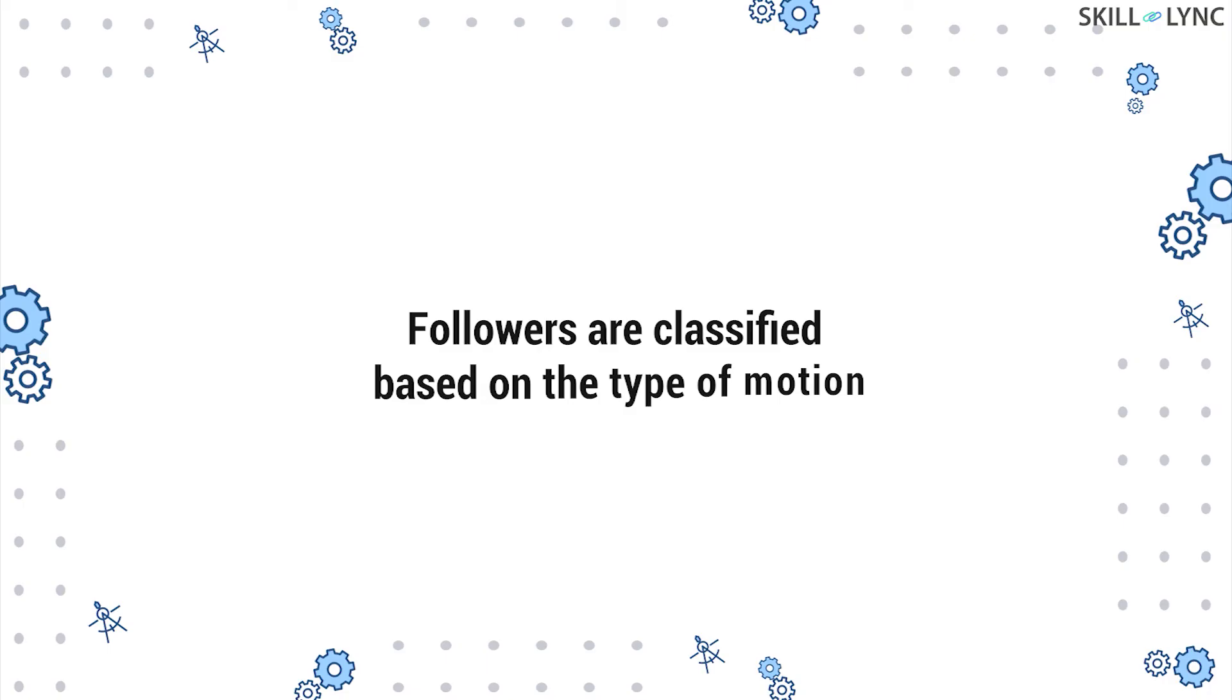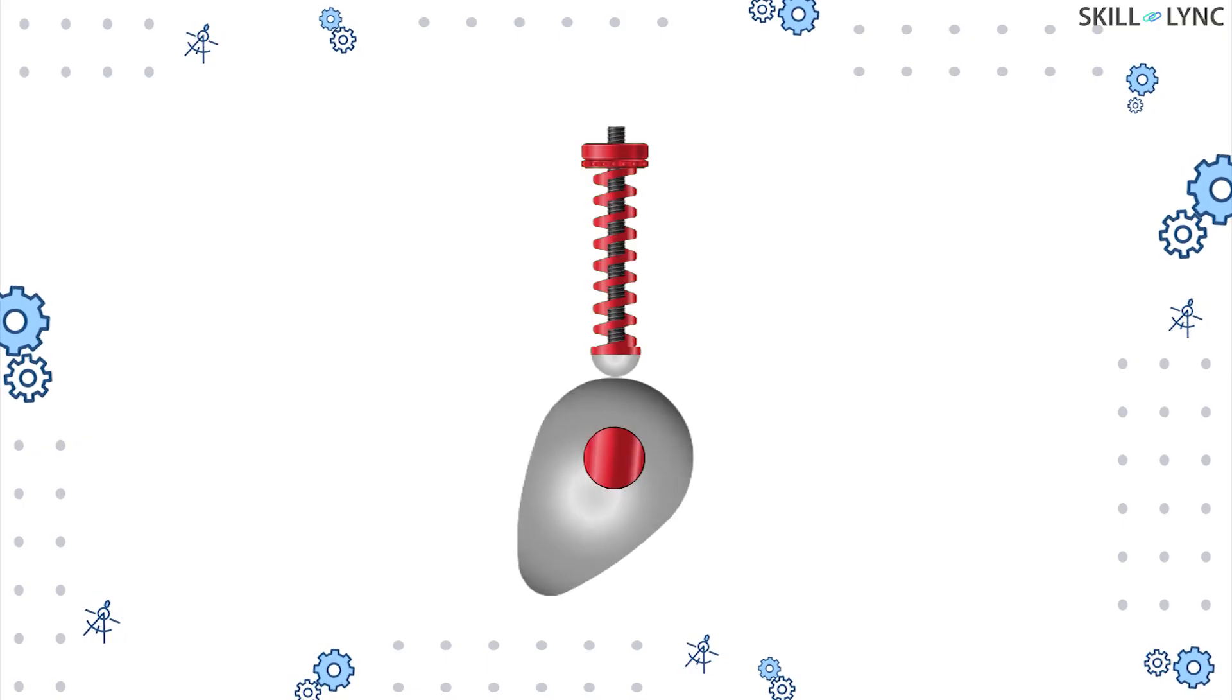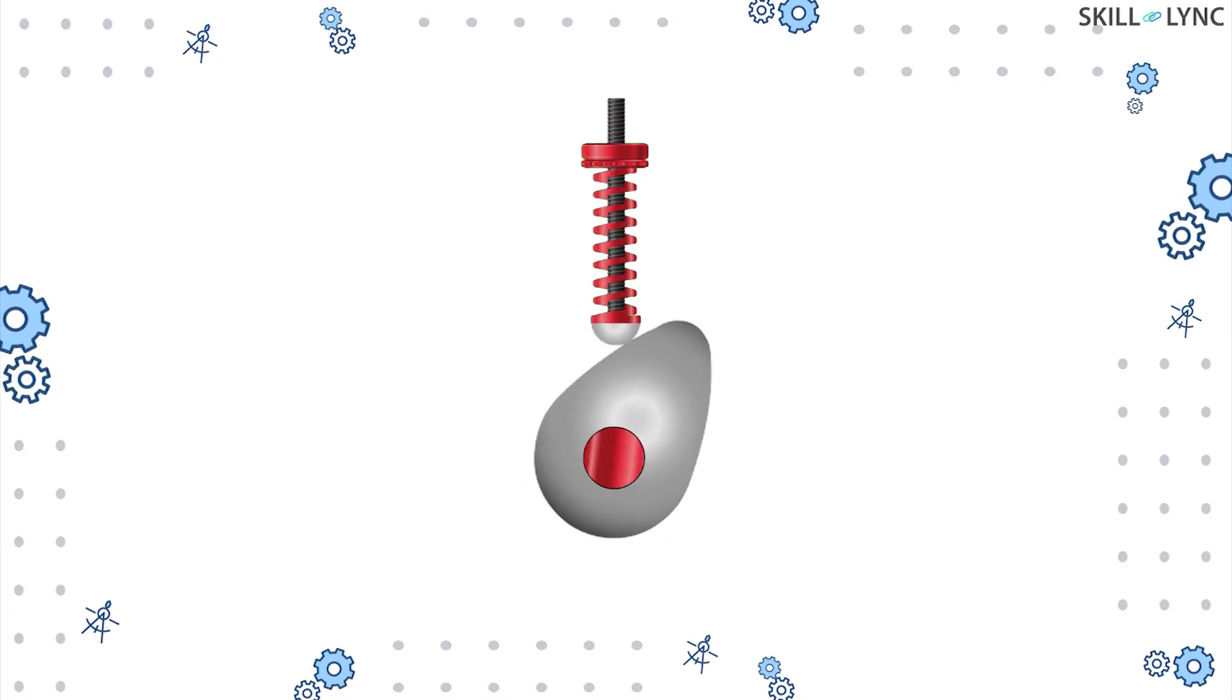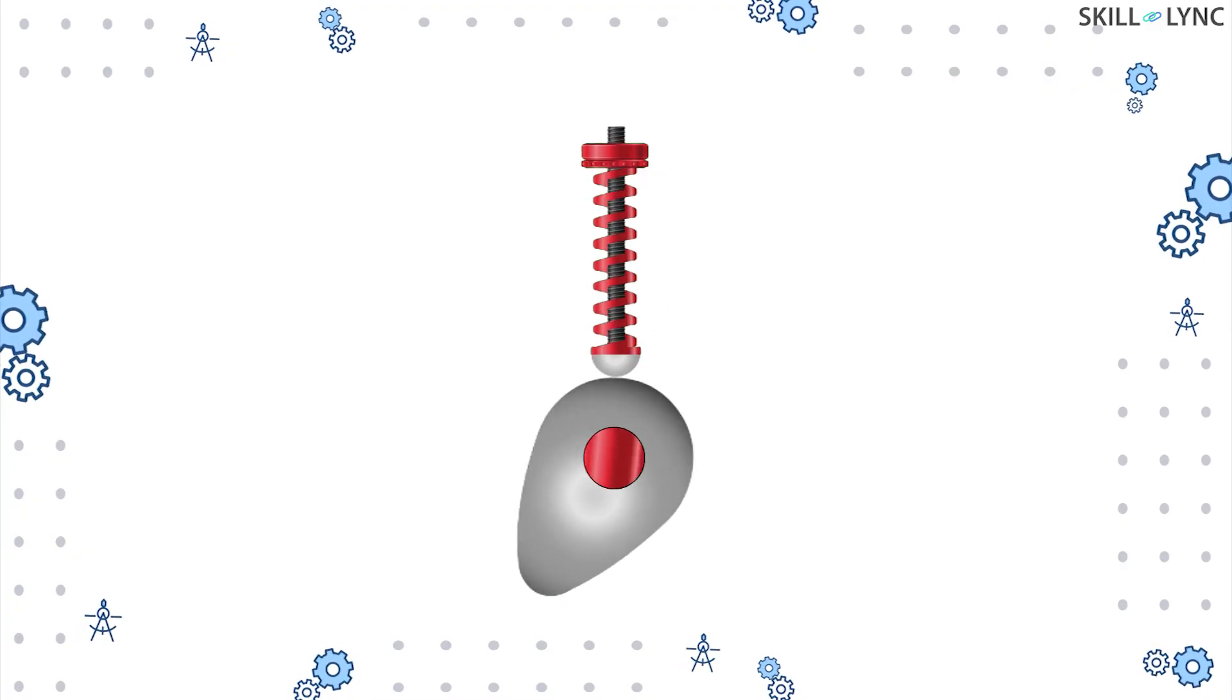In addition to all these, followers can be classified into two types based on the type of motion. If the motion of the follower is in a straight line, then it is said to be translating follower.